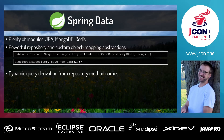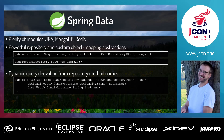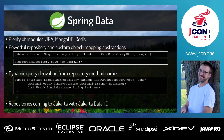You can also create custom queries by using specific naming patterns. In this example you can find all users by a defined last name — only the interface is created, and the implementation is done by Spring Data at runtime. The Eclipse Foundation is currently also working on Jakarta Data 1.0, which brings repositories to Jakarta, but that's not done yet — I think it will be released next month.